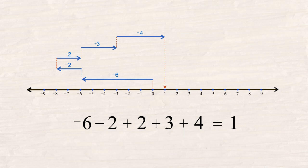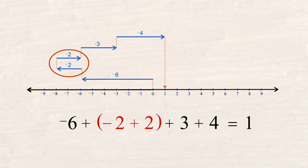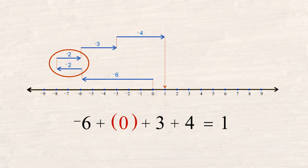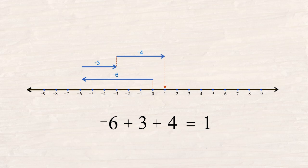We could also use the associative property to group some of the numbers to be added. For instance, the negative two and the positive two could be grouped. Since this group adds up to zero, we could replace it with a zero, or eliminate it altogether.